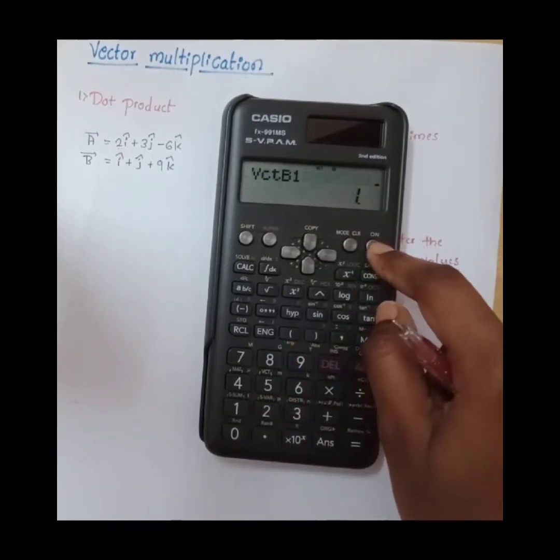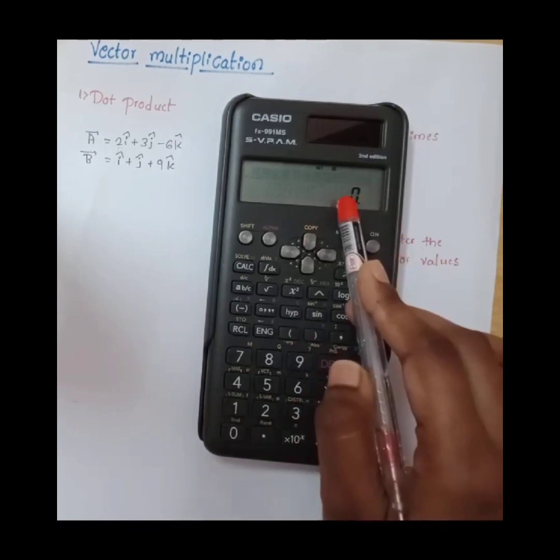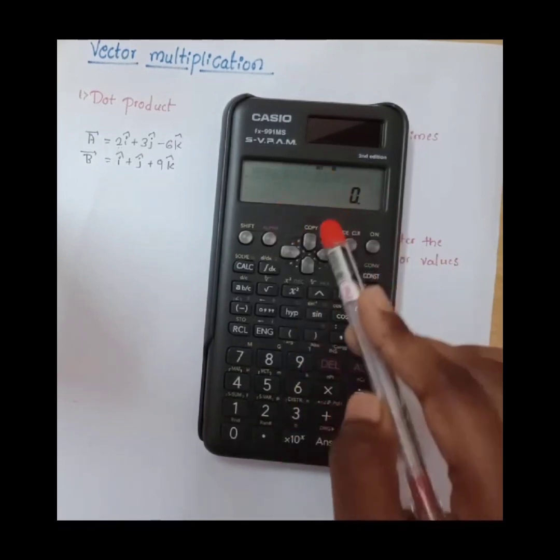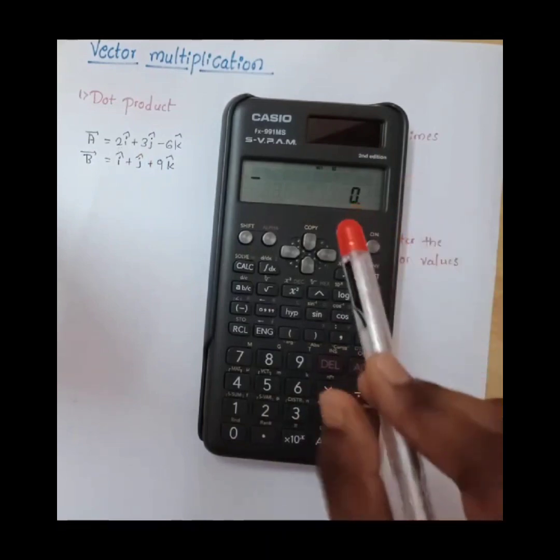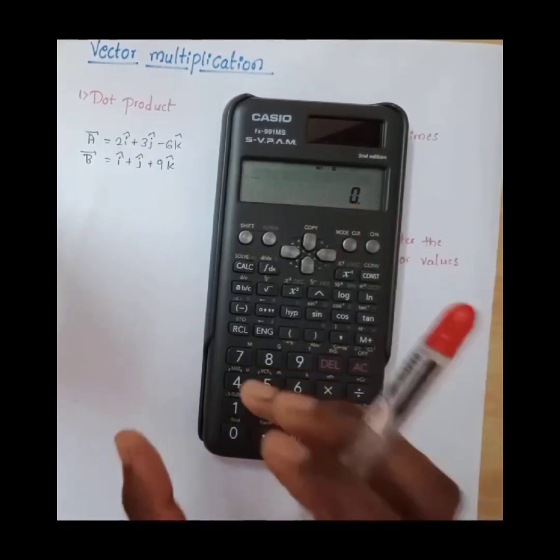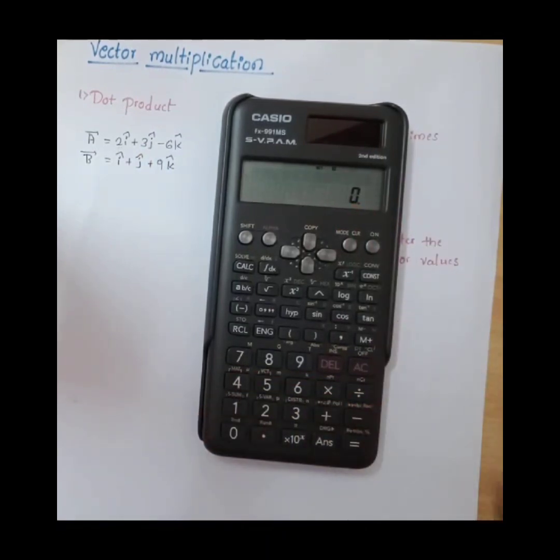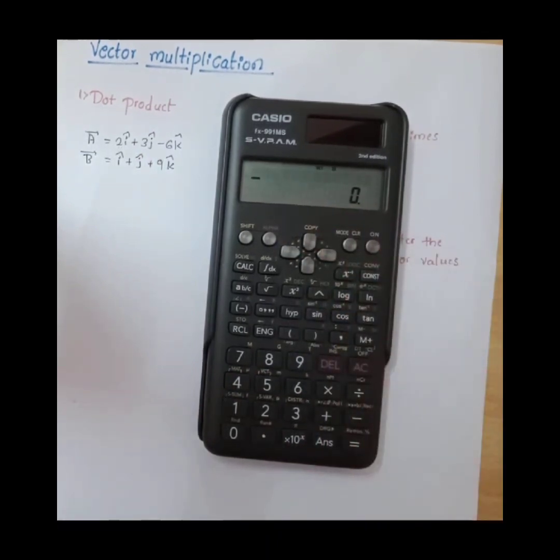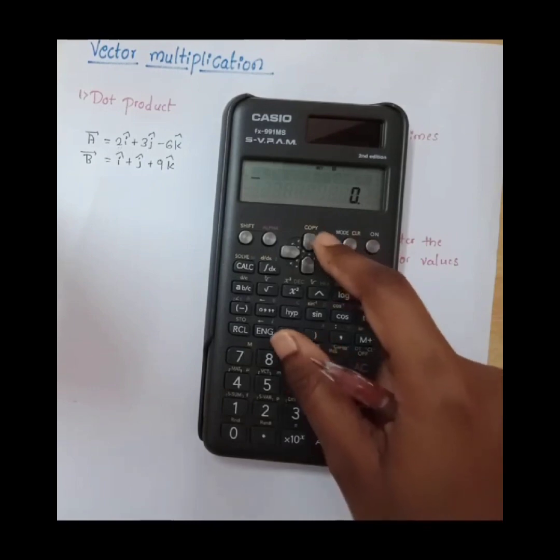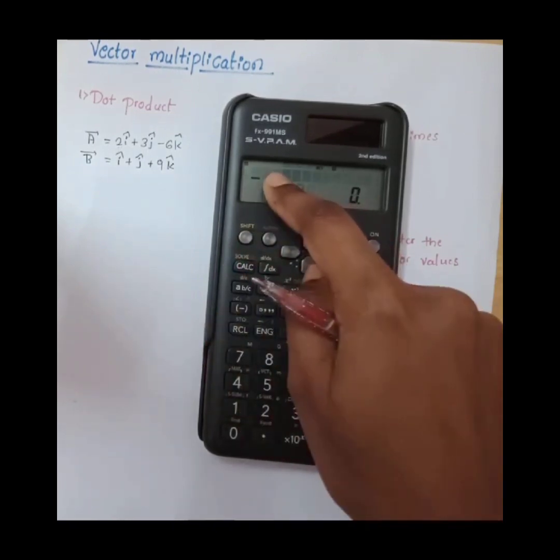Again come back by pressing ON. We have stored A and B values in the calculator. Now we have to find vector A dot vector B. Again press ON, shift five.